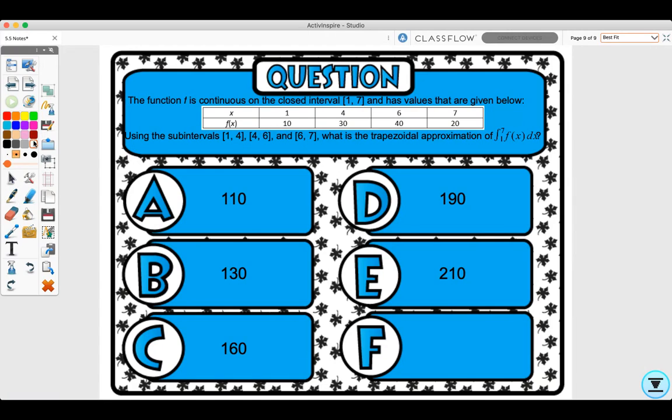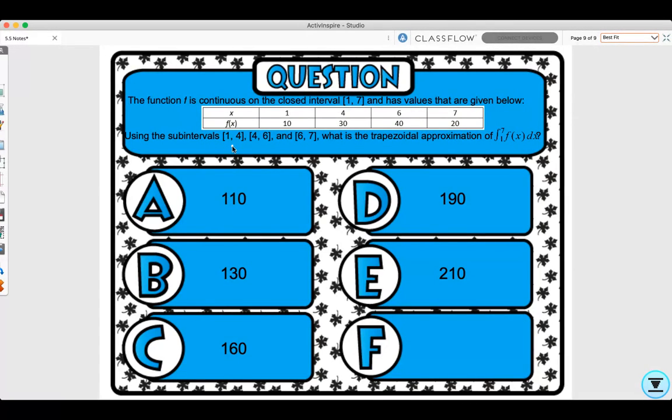For this one, you need to note that these interval lengths are not the same. This one is 3, this is 2, and this is 1. Since these interval lengths are not the same, we need to use individual trapezoids. We cannot use the formula.